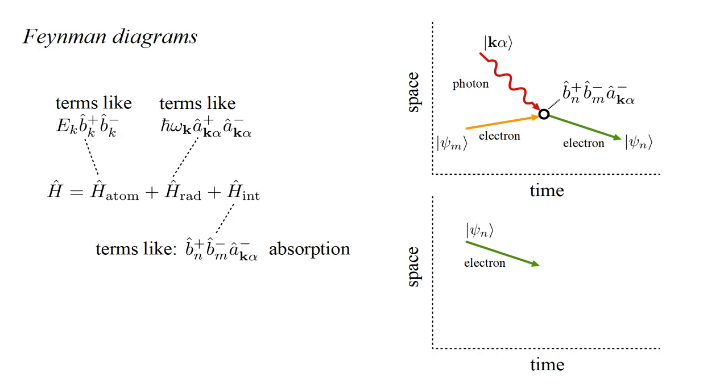Another possible process is that we start with an electron in the n-th orbital. A quantum jump occurs which destroys this electron and simultaneously creates a photon in the k-alpha mode and an electron in the m-th orbital.